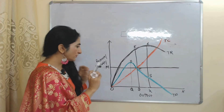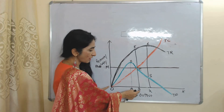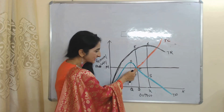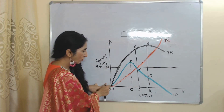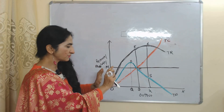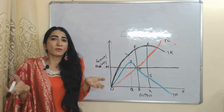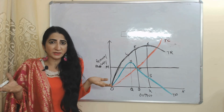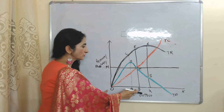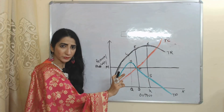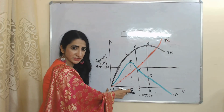According to this model, we will produce OD amount of output. At OD amount of output, we are receiving CD profit, and CD profit is exactly equal to our minimum profit OM. So according to this model, our optimum amount of output will be OD. We want to maximize our sales revenue without doing any compromise with the minimum amount of profit. Here, our sales revenue is higher compared to the profit maximization output.